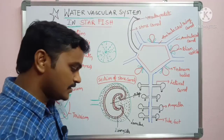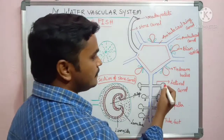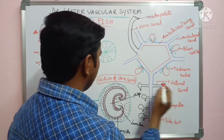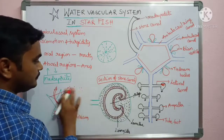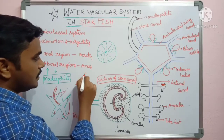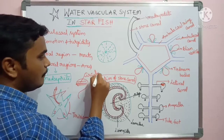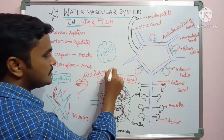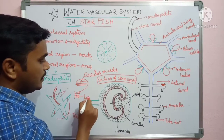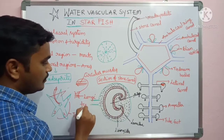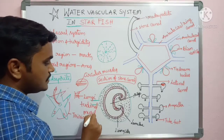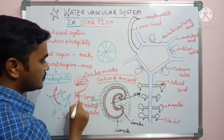The tube feet contain some muscles. The ampulla contains circular muscles. At the same time, the sucker contains longitudinal muscles. So two types of muscles are present in the tube feet.